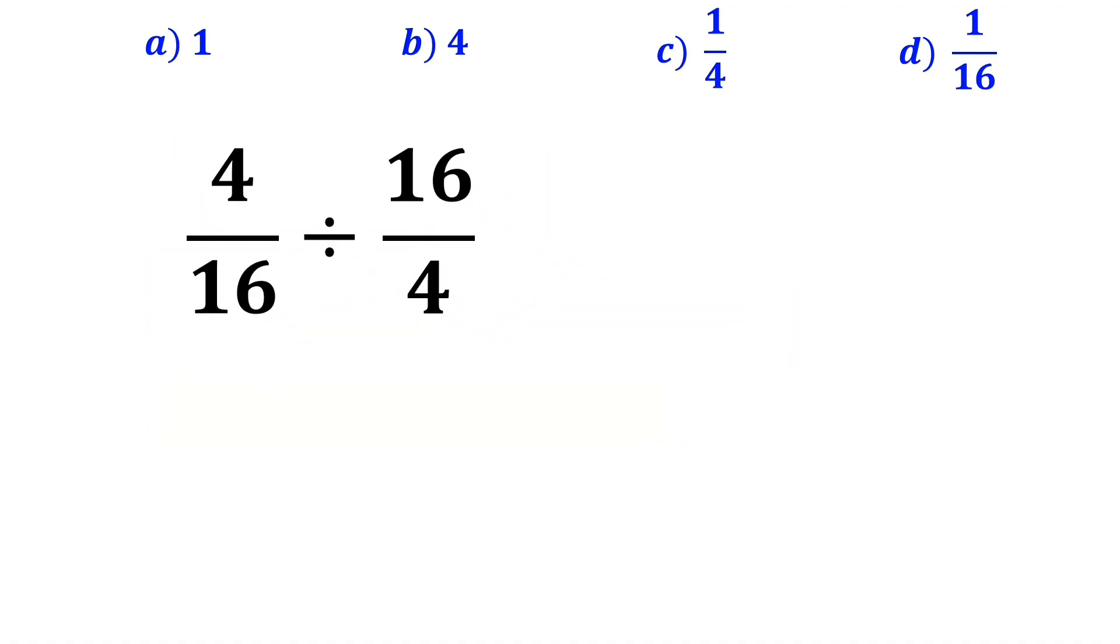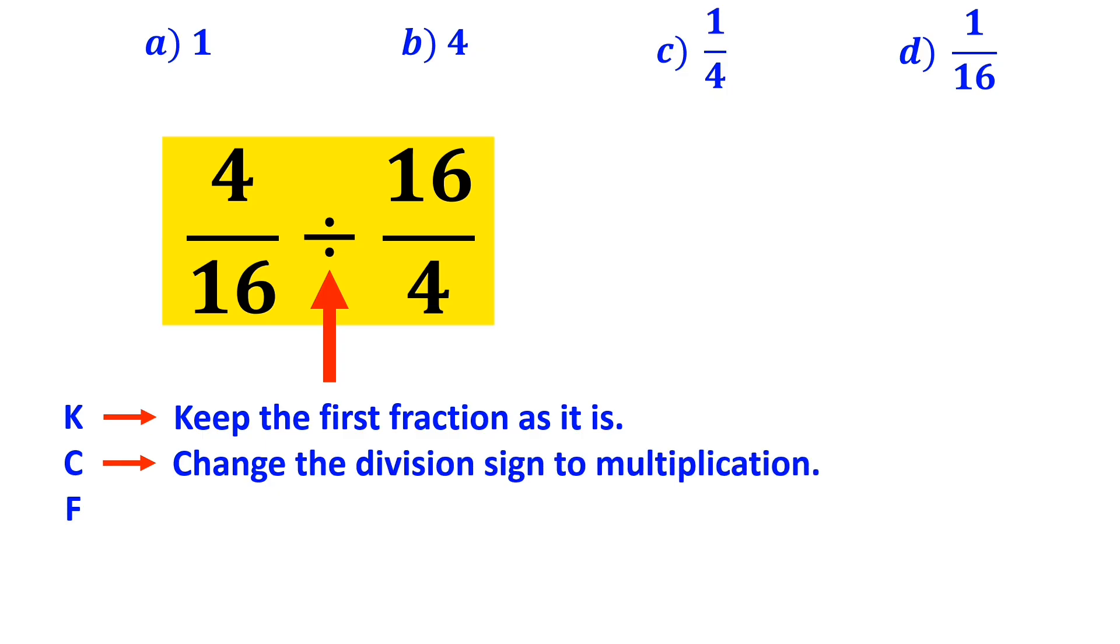At this point, we need to simplify the entire expression. Whenever we are dividing two fractions, it's best to apply the KCF method. In this rule, K means keep the first fraction as it is, C means change the division sign to multiplication, and F means flip the second fraction.